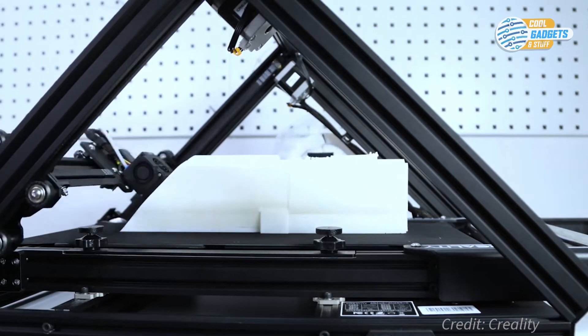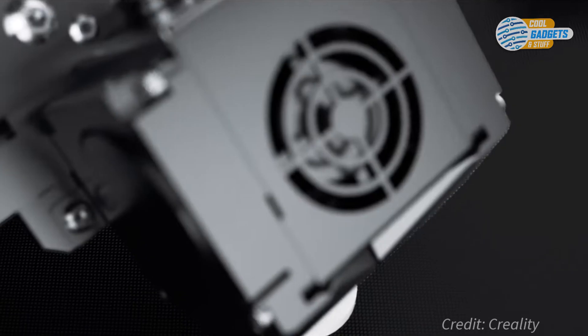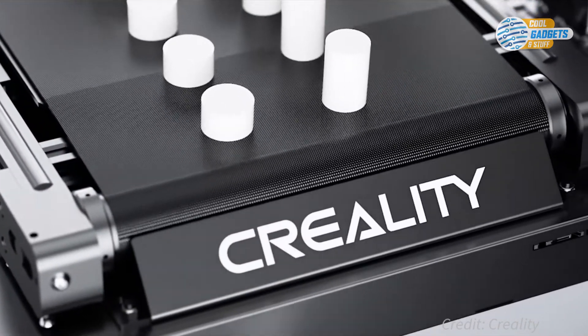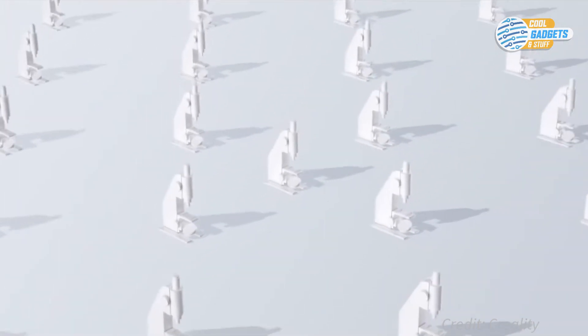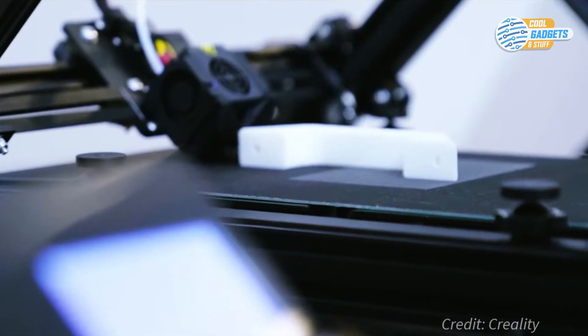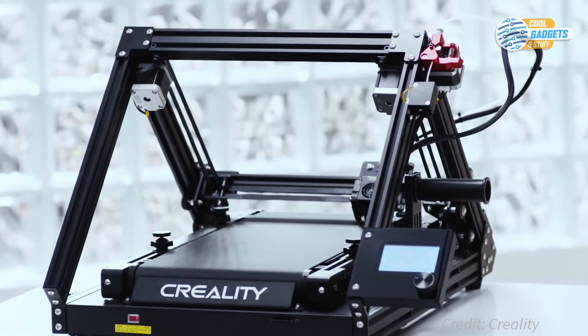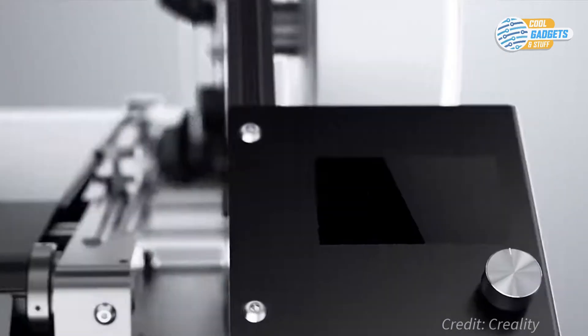Secondly, it allows for the continuous building of any single object, meaning if I need a hundred nuts or say a thousand parts for a microscope, I could set the project up and the conveyor belt will do the rest. The printer will automatically push a finished project forward so it can start on the next one. No peeling, no prying, and no need to dedicate time removing prints from a sticky surface.